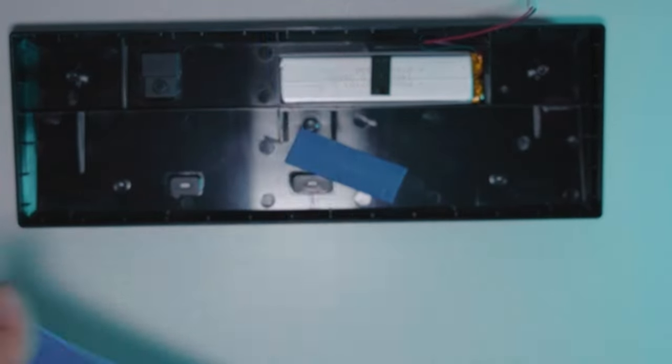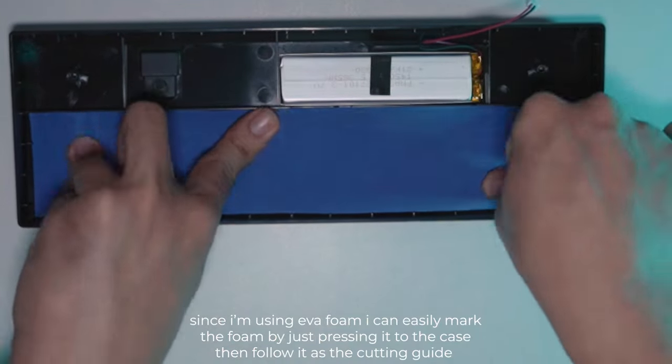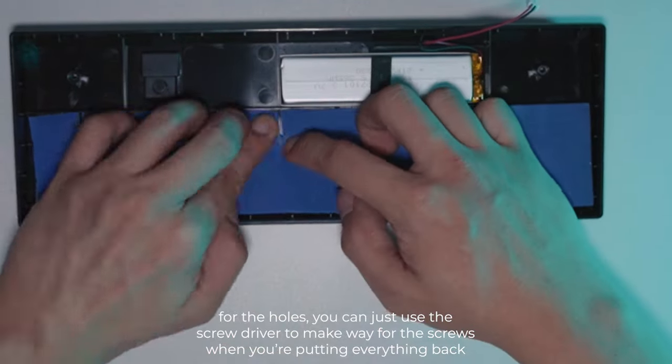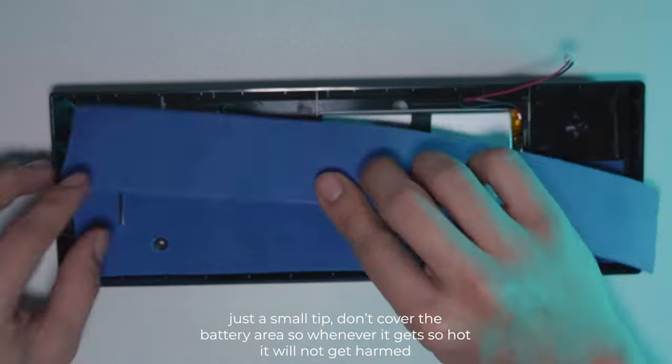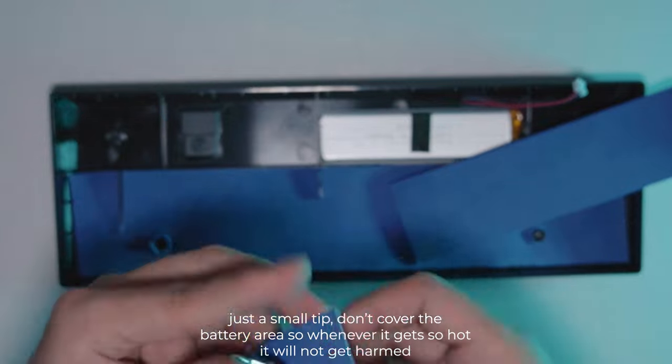Since I'm using EVA foam, it's easy to set marks for the cutting guide. You just need to press it to the area and cut the line marks to make it perfectly fit. And for the screw holes, just use the screwdriver. Take note, don't cover the area where the battery sits, so whenever you are charging or using your keyboard, it will not get that hot easily.